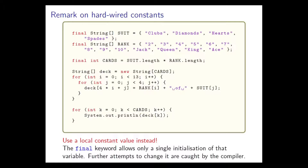By convention, when we have variables with the final modifier we write them in all caps, just so that when people see them later in the program they realize these are final variables. This can be quite handy to avoid unfortunate errors in later edits where somebody who doesn't understand that they shouldn't edit these things accidentally does so.